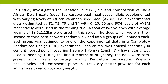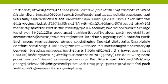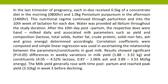Dry hay material was used as bedding. During the first four months of pregnancy, the does were zero-grazed with forage consisting mainly of Pennisetum purpureum, Veraphasia loides, and Centrosema pubescens. Daily dry matter provision for each animal was based on three percent body weight. In the last trimester of pregnancy, each doe received half a kilogram of a concentrate diet in the morning.